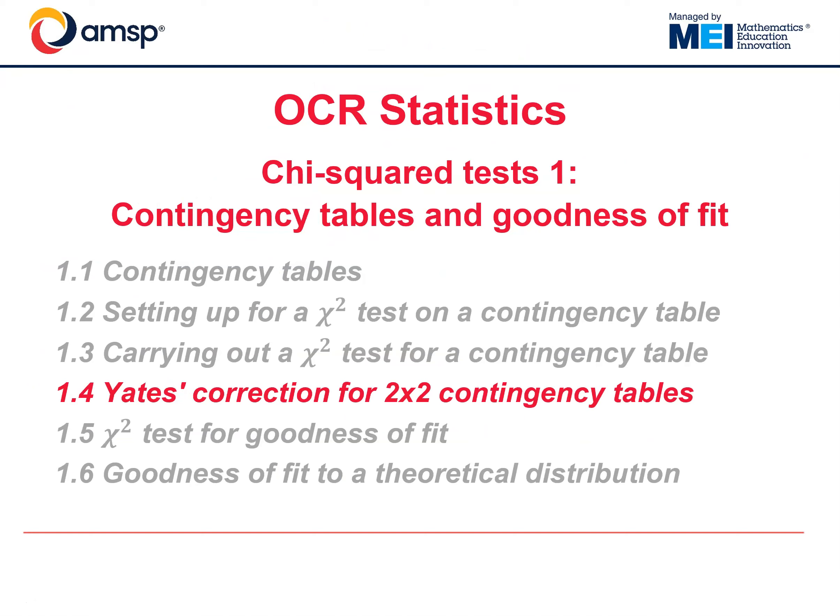That's the end of this video on carrying out a chi-squared test for a contingency table. In the next video, we will look at Yates' correction, which adapts the method for very small contingency tables.